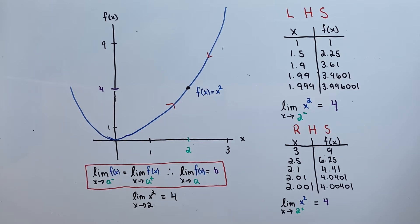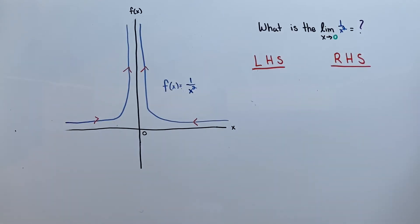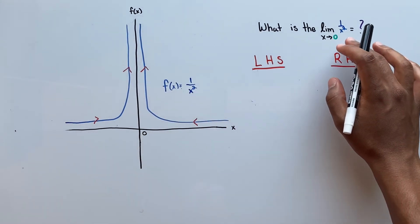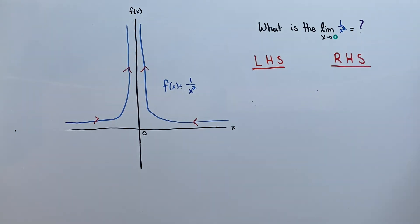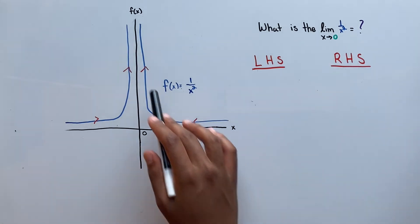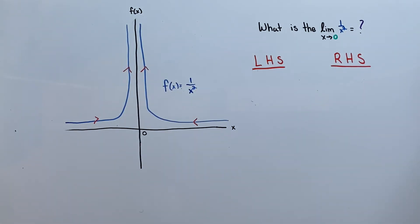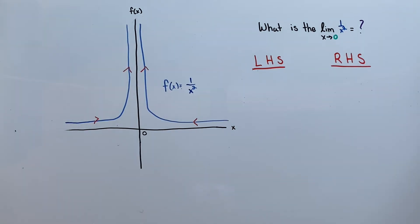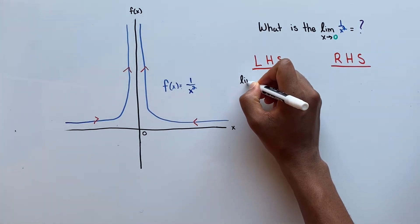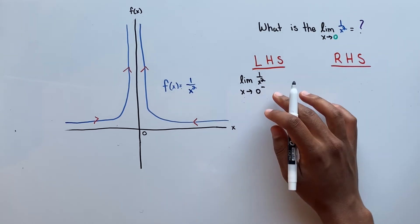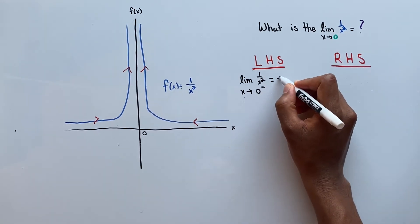Now let's look at another example. So over here, I drew the graph f of x equals 1 over x squared, and we are asked to find the limit of 1 over x squared as x approaches 0. Like I said before, we have to take into consideration the behavior of our function as x approaches 0 from the left-hand side and x approaches 0 from the right-hand side. So from the left-hand side, we see that as our x approaches 0, our y increases to infinity. So we can say that the limit of our function as x approaches 0 from the left-hand side, which we denote with a negative, equals positive infinity.